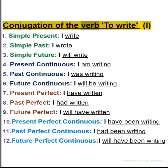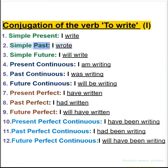Conjugation of the verb to write. I. 1. Simple present: I write. 2. Simple past: I wrote. 3. Simple future: I will write.